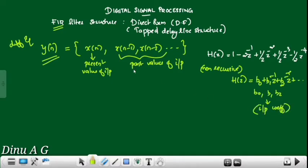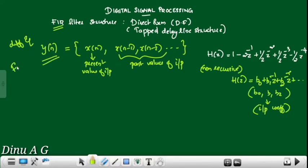So y(n-1) and y(n-2) are the past values of output terms. Since there are no past output terms — no y(n-1), y(n-2) — the system comes under FIR filter.